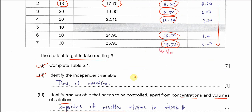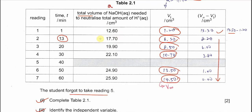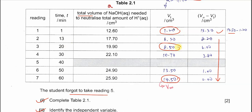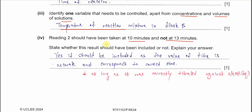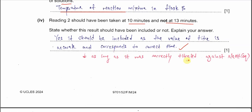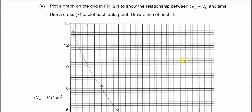State whether this result at 13 minutes should be included. We need to do a comparison: at 1 minute Vt = 1.2, and at 20 minutes Vt = 8.5, meaning more acid is formed over time and more NaOH is needed. At 13 minutes, Vt = 6.3, which is larger than the value at 1 minute and smaller than at 20 minutes. Since the value is consistent with the trend and accurate with its corresponding time, the answer is yes — it should be included.